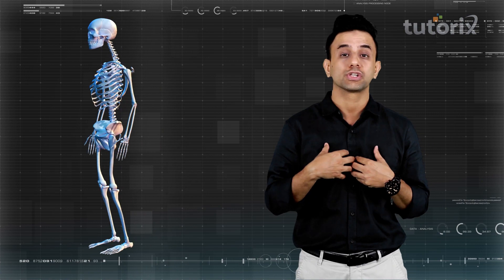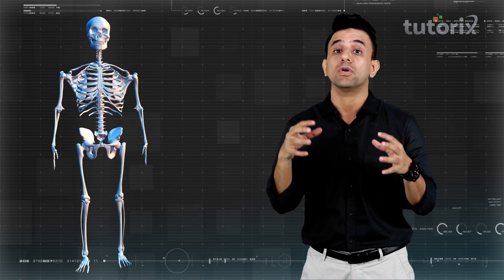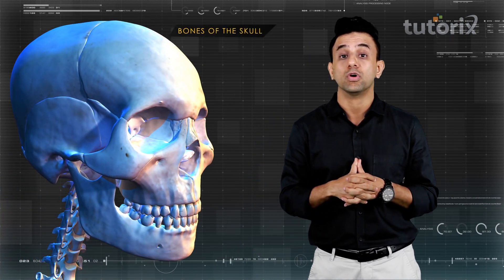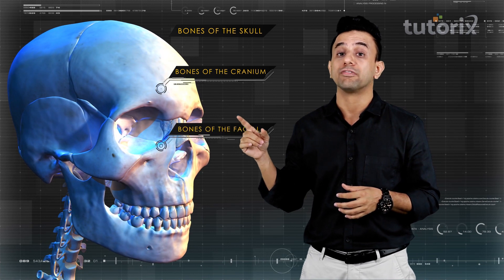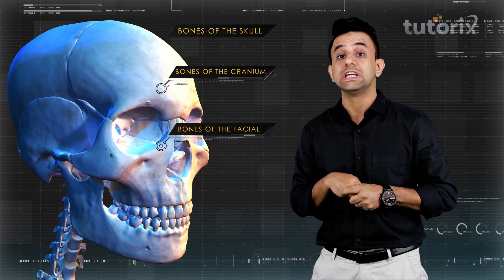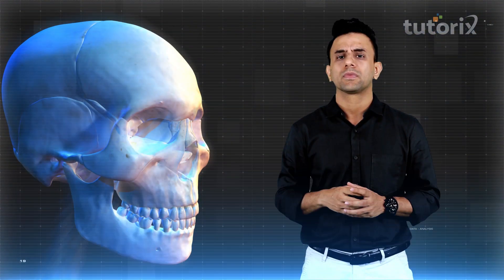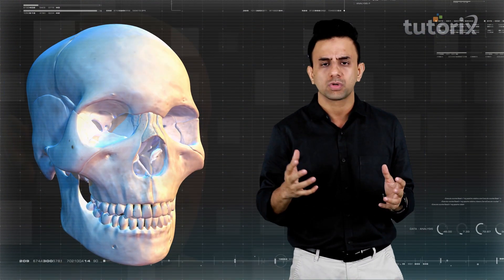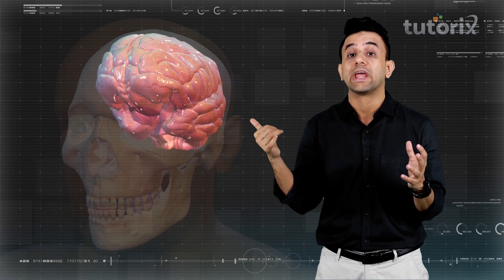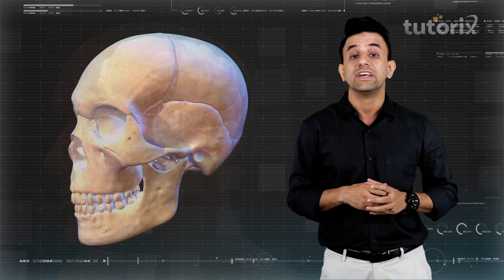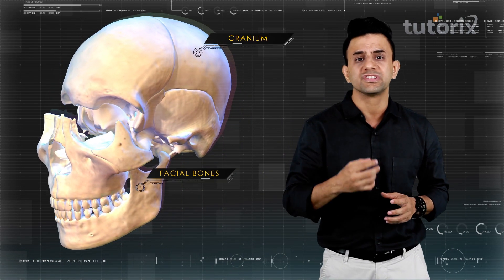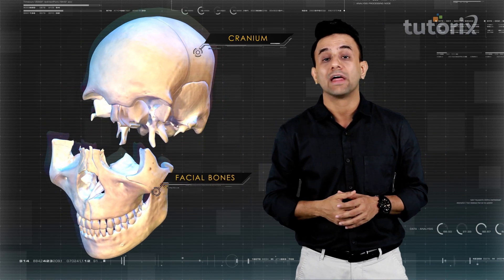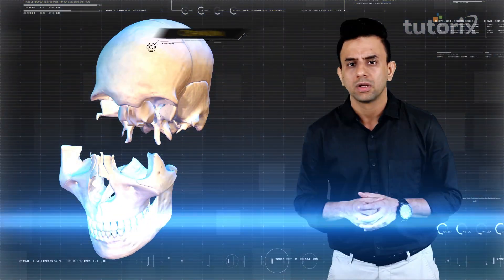Today in this session we are going to talk about the bones of the skull — that is, the bones of the cranium and the facial bones. We shall talk in detail about each one of them. The skull is a bony structure that supports the face and forms a protective covering for the brain. The entire skull is divided into two sections: the cranium and the facial bones.